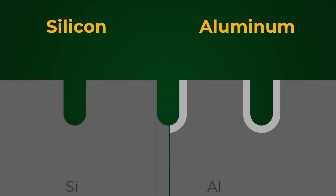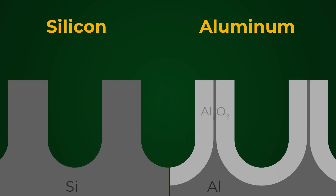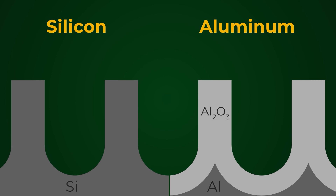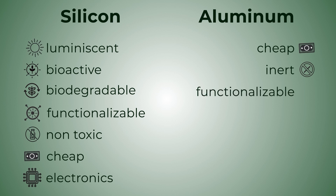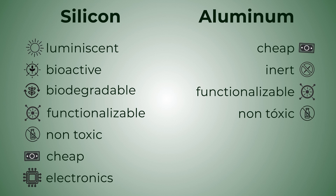On the other hand, once aluminum forms these nanopores, a layer of aluminum oxide is formed, which is what gives the structure to those pores. As main characteristics, this material once it has formed the pores is cheap, and it is a fairly inert material because that aluminum oxide reacts with few compounds, at least under normal conditions of use. This also makes it have a low toxicity, since although aluminum and its ions can be relatively toxic, because of having an aluminum oxide layer that protects the interior, it can be used safely.